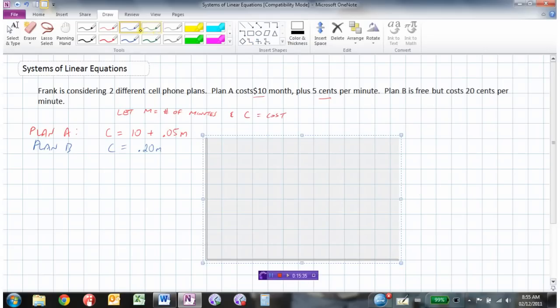So notice in this one, I just have a positive x and a positive y, because it doesn't make sense to have negative minutes, and it doesn't make sense to have a negative cost.